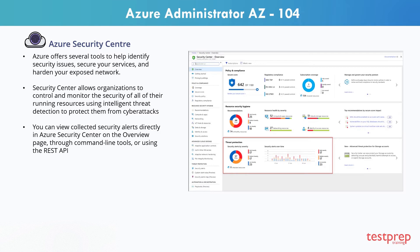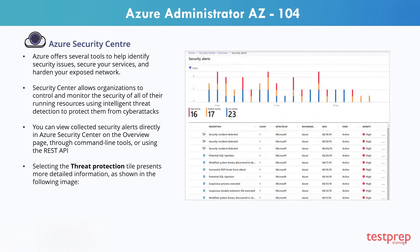The Security Center dashboard is available right off the main Azure portal dashboard or through the search window. You can view collected security alerts directly in Azure Security Center on the overview page, through command line tools, or using the REST API. Selecting the threat protection tile presents more detailed information, as shown in the image.